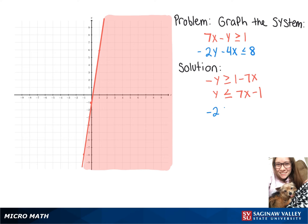Our first step here is going to be to add 4x over, leaving us with negative 2y is less than or equal to 4x plus 8. Now dividing both sides by negative 2, again, since we have a negative number, we're going to flip the sign in the middle. So that leaves us with y is greater than or equal to negative 2x minus 4.